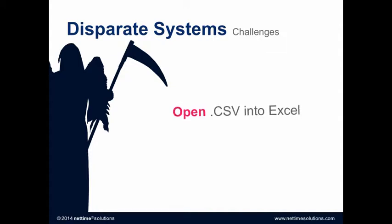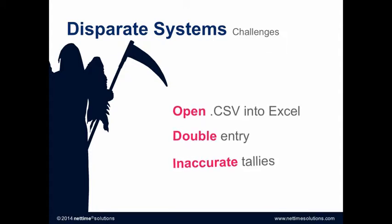In the HR software world, we come across a number of companies with platforms that tout their integrations. Unfortunately, many of these integrations take the form of file-based transfers. Here's what a file-based transfer looks like from a time-and-attendance software into a payroll system: you download the data as an Excel-type spreadsheet, like a CSV or XLS file. The spreadsheet is then manually verified, possibly edited and corrected, and then uploaded into a payroll system. The process is not only time-sensitive, but it also allows for human error.